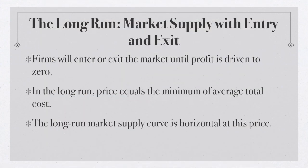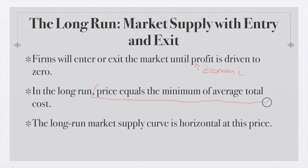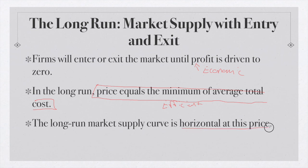Firms will enter and exit the market until economic profit is driven to zero. So in the long run, price ends up being equal to the minimum of the ATC — firms end up producing at the efficient scale of production. The efficient scale is the minimum of the ATC. Because of free entry and free exit, firms end up producing at the efficient scale of production, and the long run market supply curve ends up being horizontal because of this process of entry and exit.